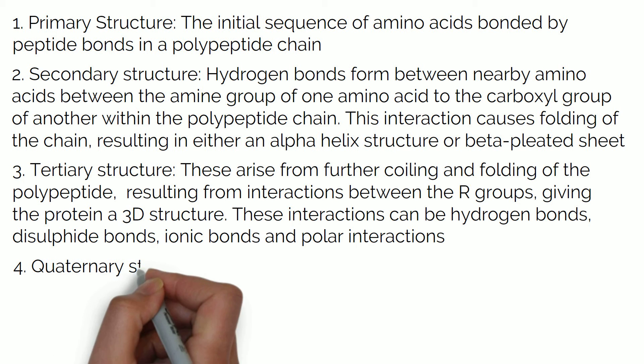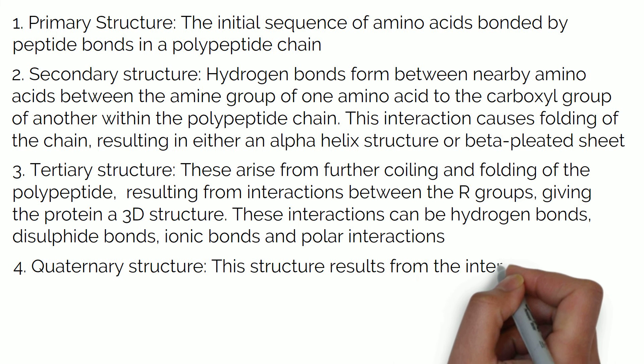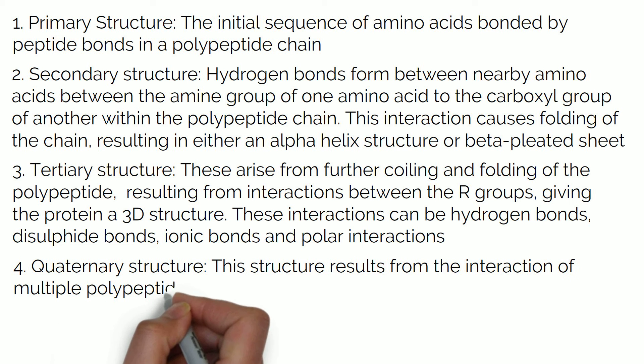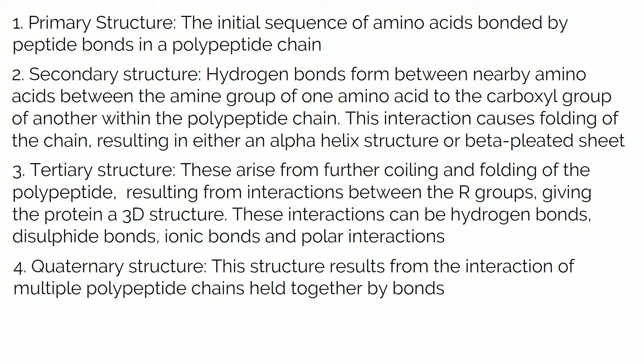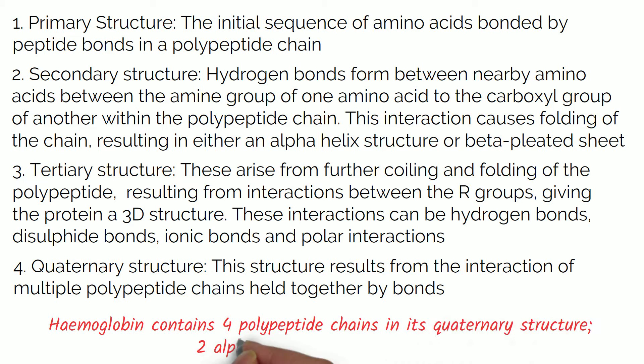The quaternary structure of a protein results from the interaction of multiple polypeptide chains held together by bonds. For example, haemoglobin contains four polypeptide chains in its quaternary structure, two of which are alpha helix and two are beta pleated sheets.